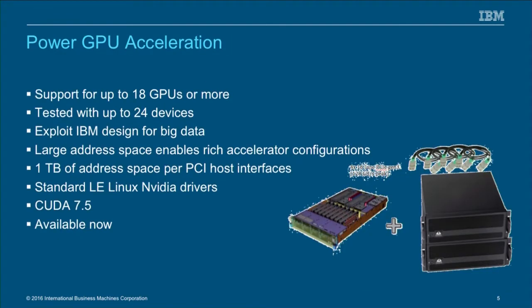Our vision in OpenPower is to really adopt openness and provide interfaces — whether CAPI or NVLink — whereby we can adapt accelerators. If you've got compute-intensive jobs, we can offload that to a GPU. If you've got certain other applications, whether transactions or others which can utilize FPGAs, we can offload that through CAPI to an FPGA as well.